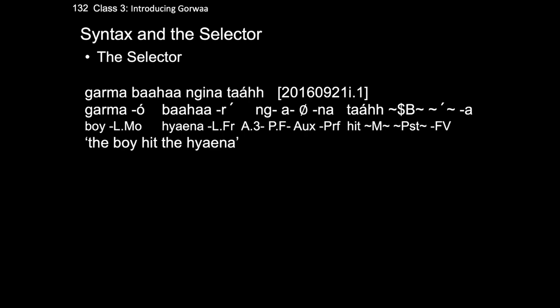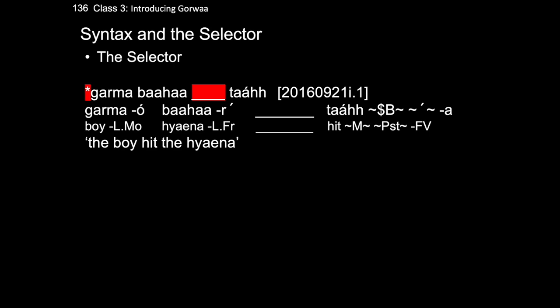Returning to our example, we have so far discussed nouns and verbs. I'd like now to discuss one final form, an example of which is highlighted here, and which in the literature on South Cushitic is called the selector. Basically, the selector is a collection of affixes surrounding an auxiliary verb, and serves some of the key grammatical functions of the phrase, including indicating who did what to whom, notions like aspect and voice, as well as other functions. In fact, the selector is so important that without it, most Gorwa phrases are ungrammatical.